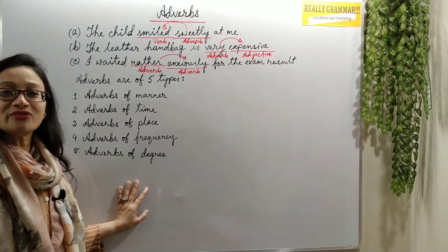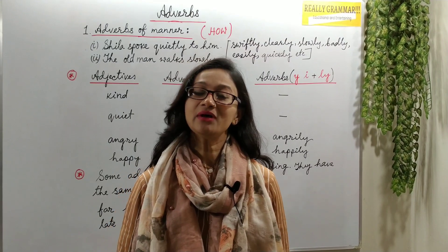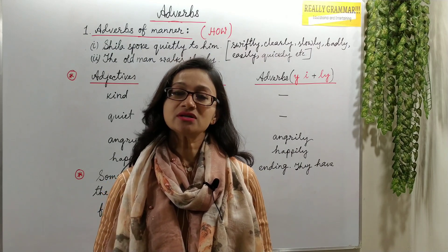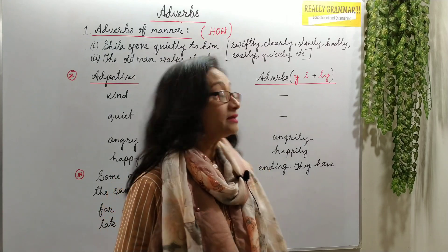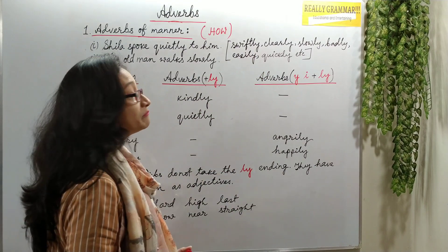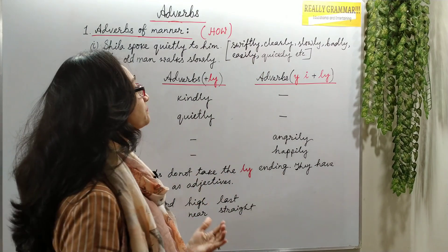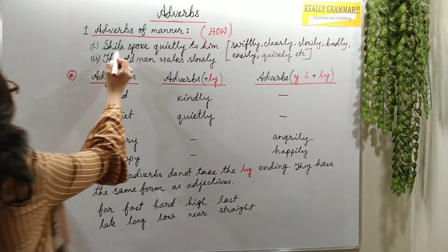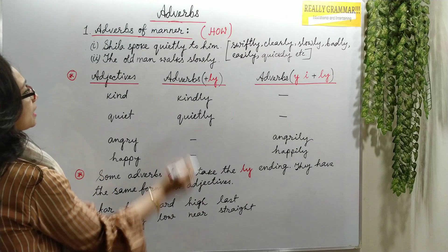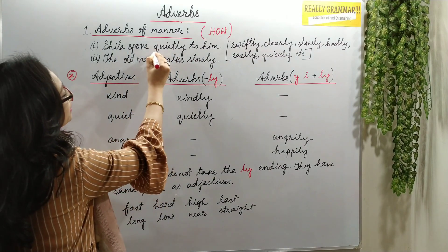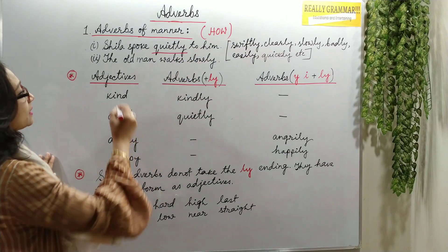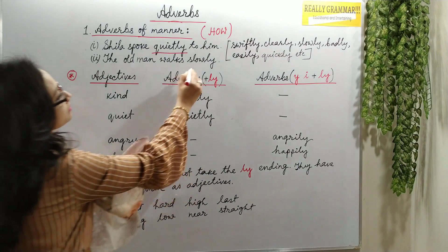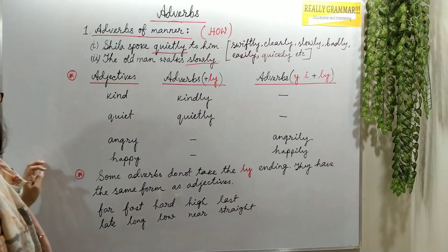Let's discuss adverbs of manner. Adverbs of manner tell us how the action is done. They answer the question 'how?' Examples include: swiftly, clearly, slowly, badly, easily, quietly, quickly. For example, 'Sheila spoke quietly to him' — quietly is the adverb of manner. 'The old man walks slowly' — slowly is also an adverb of manner.